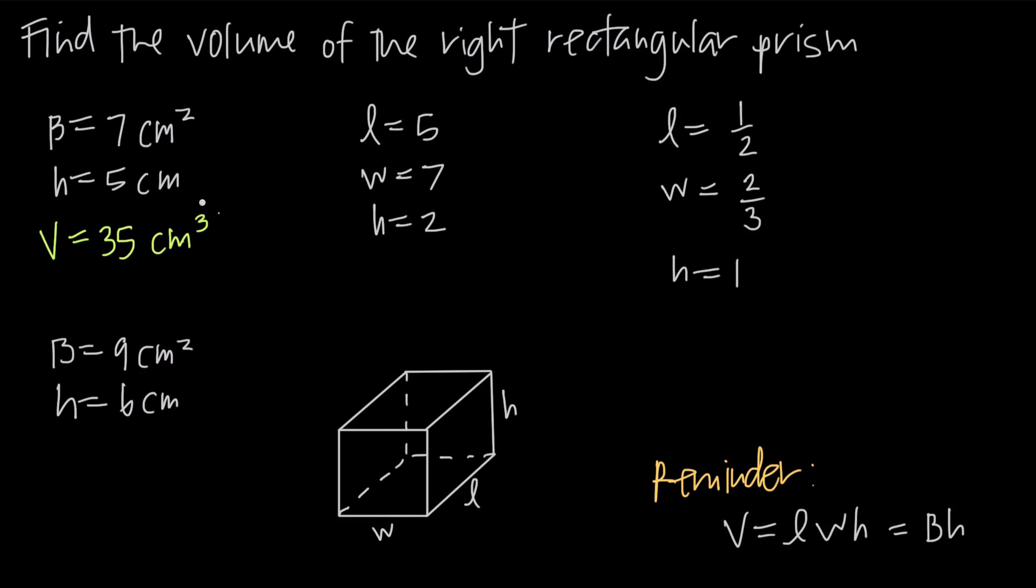When we give volume, we give cubic units. When we give area, we give square units. When we give length, we just give first degree units. So it's 5 centimeters long. It's 7 square centimeters of area. It's 35 cubic centimeters of volume.